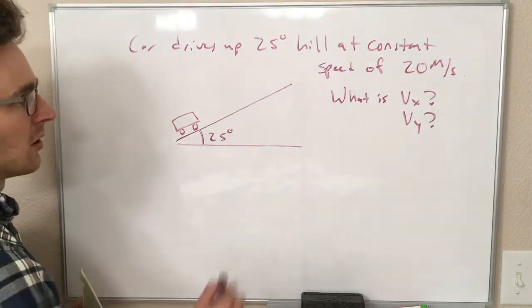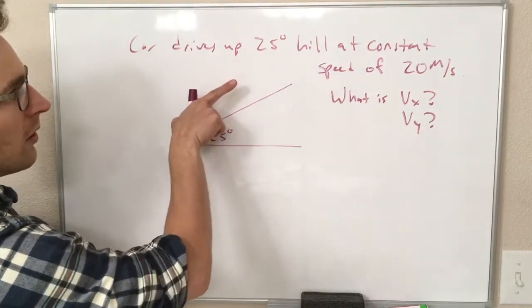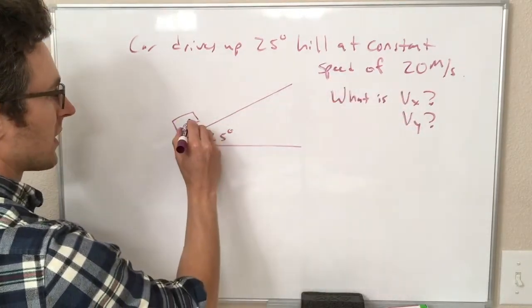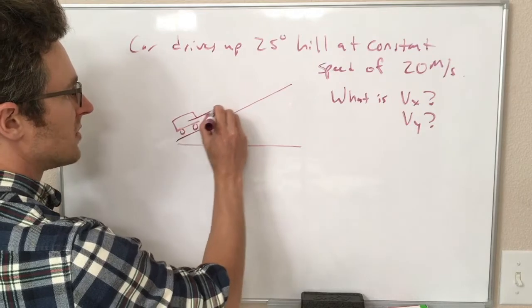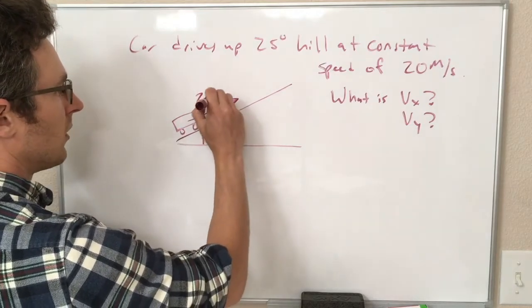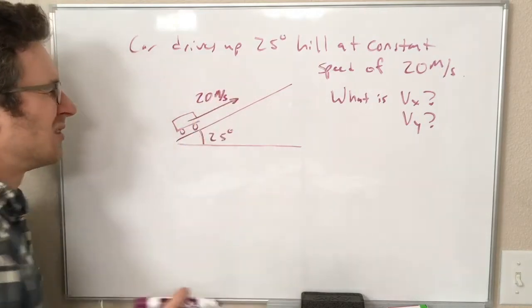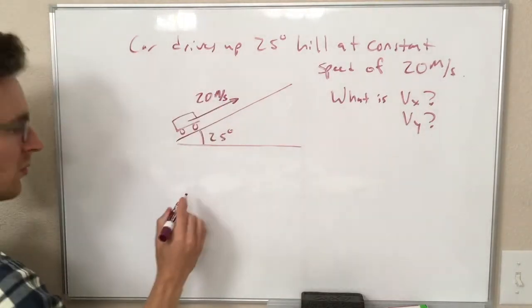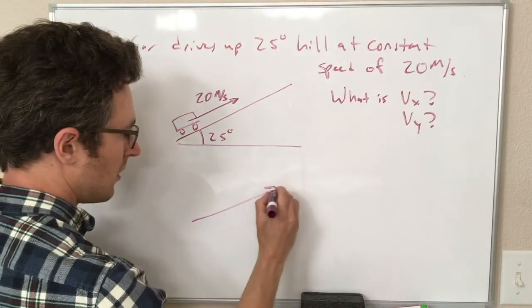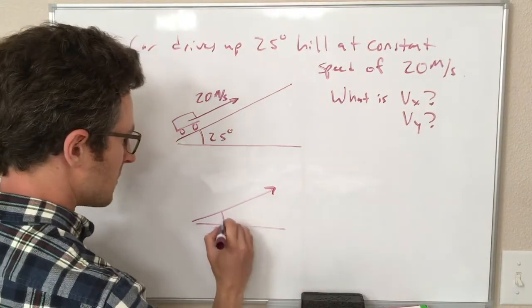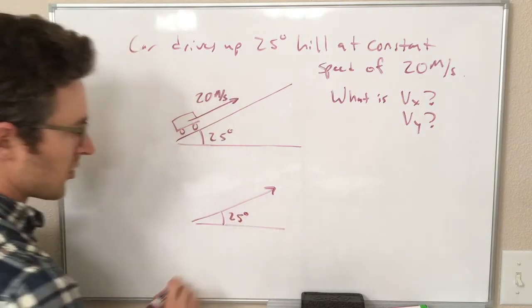So I've started drawing a picture. We're going uphill, we're going a speed of 20 meters per second. So our velocity vector is going to be up the hill and is going to have a magnitude of 20. So we can kind of move this into math land momentarily. So here is our picture,